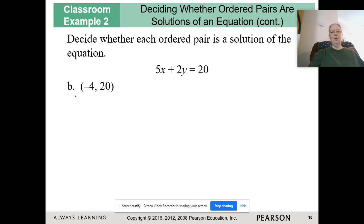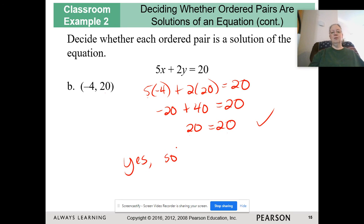Same directions, same equation, different ordered pair. For (-4, 20), we're going to take negative 4, plug it in, 20, plug it in. So 5 times negative 4 plus 2 times 20 equals 20. We're going to simplify by multiplying, then we add. This time we do get 20 equals 20, which is true. So this would be a solution to this particular equation.